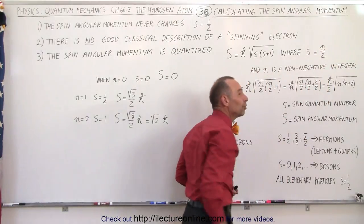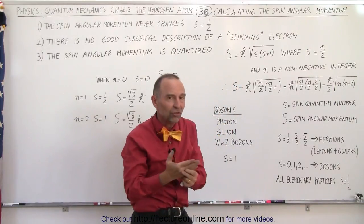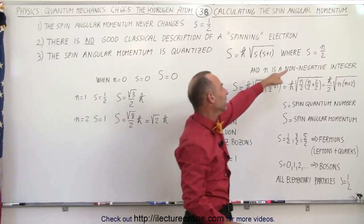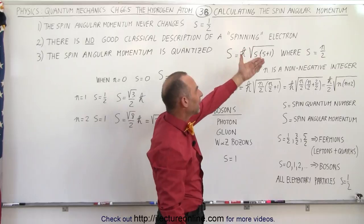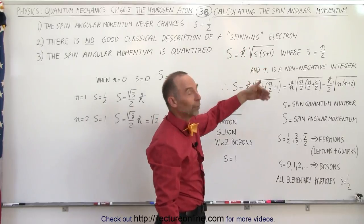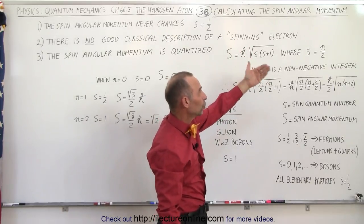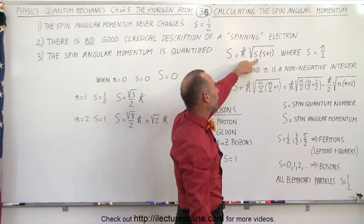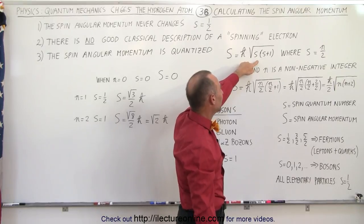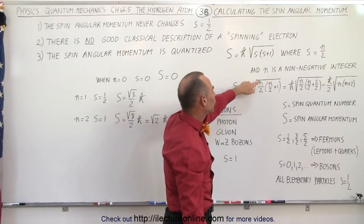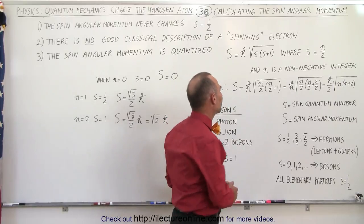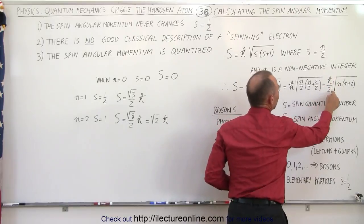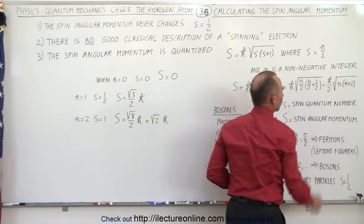Now this is not to be confused by the principal quantum number. n is simply just an integer zero or positive, not negative, so it's a non-negative integer. Therefore, instead of writing it in terms of the spin quantum number, we can write it in terms of the integer n. And if we do so, we say that the spin angular momentum is h-bar divided by 2 times the square root of n times n plus 2.